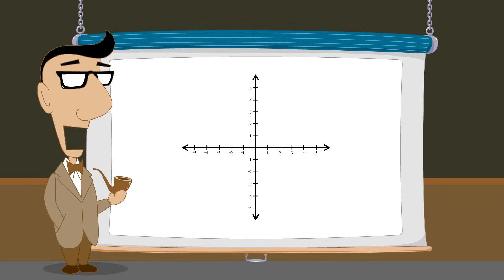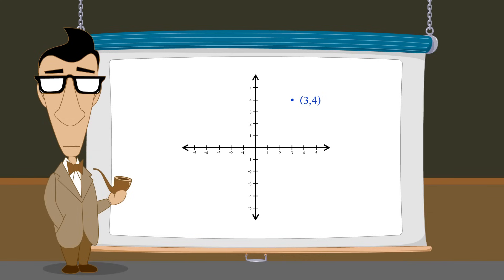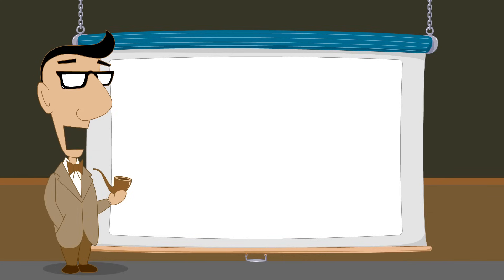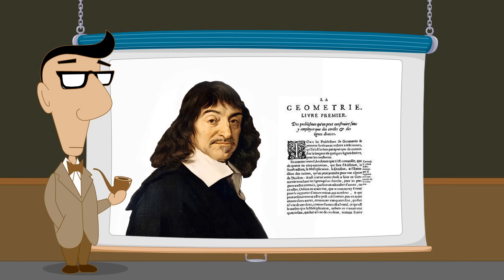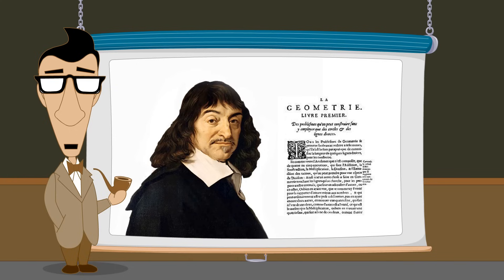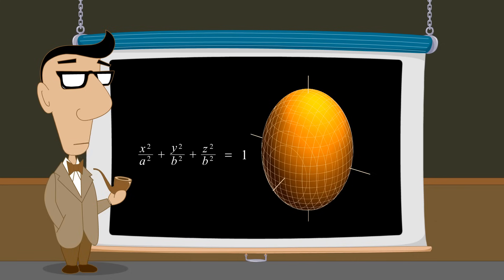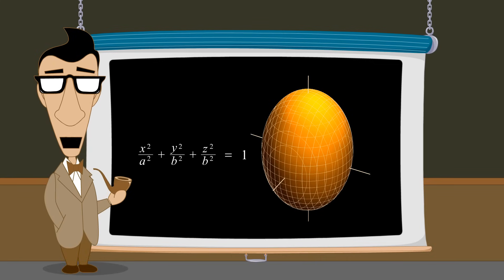This system for visualizing ordered pairs of real numbers as points is called the Cartesian coordinate system. The elements of an ordered pair which corresponds to a point are called the coordinates of the point. The ideas which led to this system were developed by Rene Descartes in his book La Géométrie, published in 1637, which united algebra and geometry into a single subject — analytic geometry — which describes geometric shapes by algebraic equations. Likewise, algebraic equations can be visualized as geometric shapes, because algebraic equations define sets of points which, when viewed in the Cartesian coordinate system, appear as shapes.